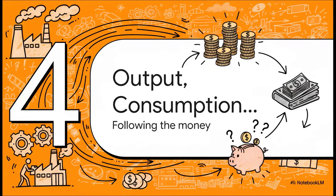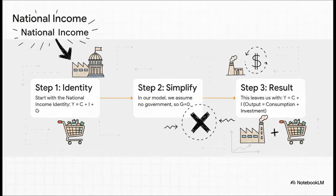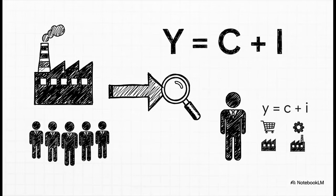Our capital and labor have produced a bunch of stuff — output, which is really just another word for income. So where does all that income go? We start with the national income identity: all the income in an economy, Y, is either spent by consumers C, invested by businesses I, or spent by the government G. To keep our model simple, we assume there's no government, so G is zero. That leaves us with a clean result: all output is either consumed or invested. And we put it all in per-worker terms — output per worker, little y, equals consumption per worker, little c, plus investment per worker, little i.